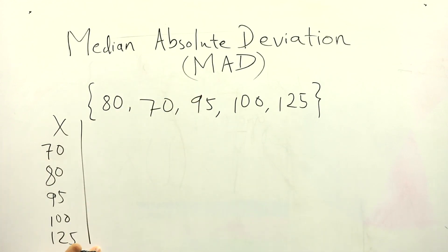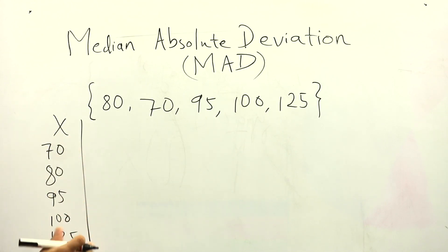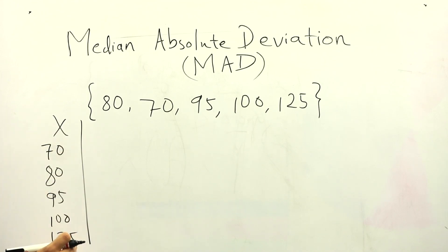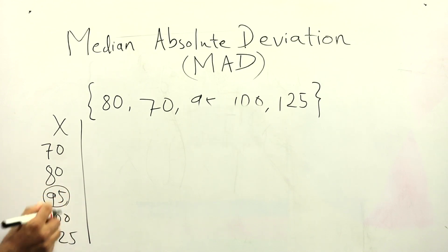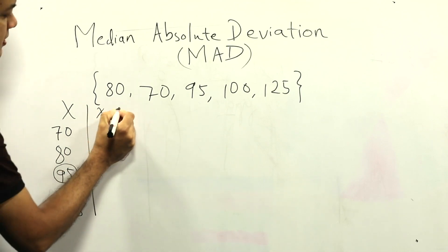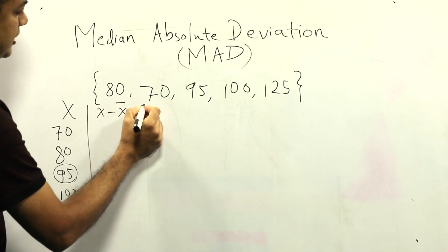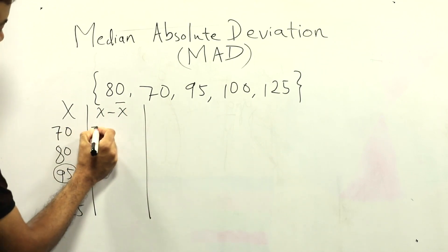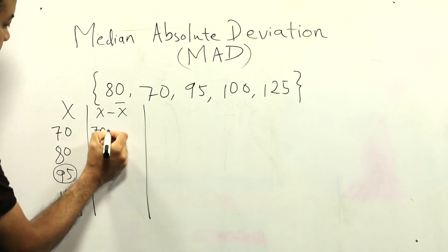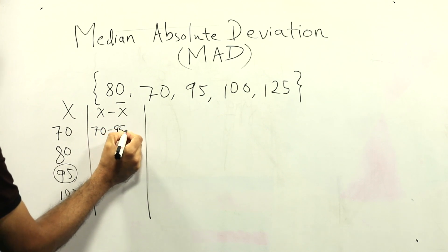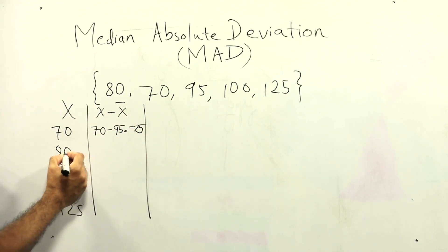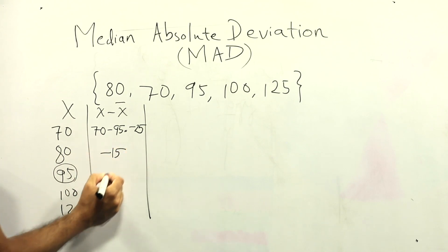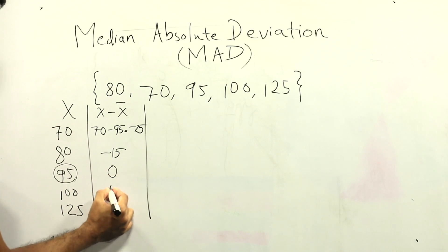With the values already in ascending order — 70, 80, 95, 100, 125 — we calculate the median. Since there are five values (an odd number), the middle value is 95. Next, calculate x minus the median for each value: 70 − 95 = −25; 80 − 95 = −15; 95 − 95 = 0; 100 − 95 = 5; 125 − 95 = 30.